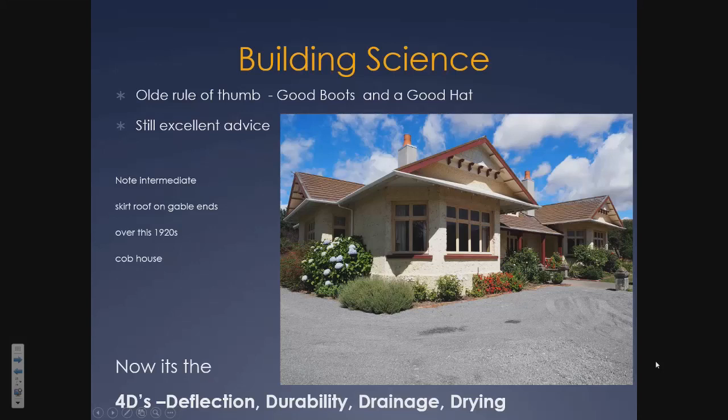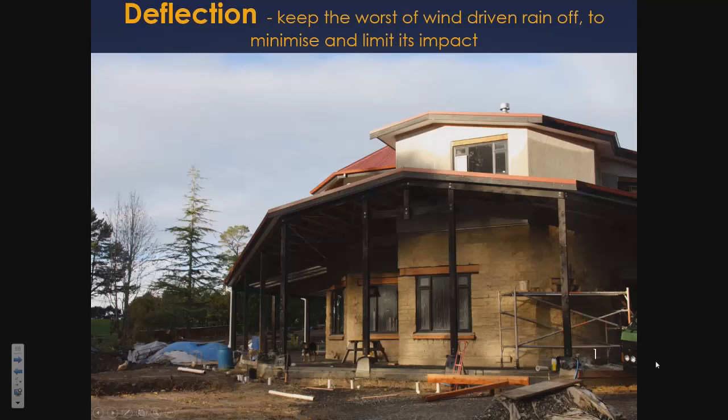We talk about the four Ds: deflection, durability, drainage, and drying. Deflection: keep the worst of wind-driven rain off to minimise its impact. This is a light earth brick house I designed a few years back — a reasonably sheltered site, but with really big eaves all around it. It hasn't been plastered yet obviously.